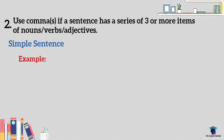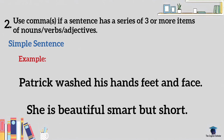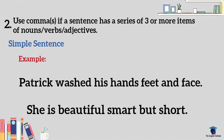How about these: 'Patrick washed his hands, feet, and face' and 'She is beautiful, smart, but short.' Here's the rule: if the sentence has a series with three or more items — whether nouns, verbs, or adjectives — we use commas, and they should be placed before the coordinating conjunction. For example: 'Patrick washed his hands comma feet comma and face.'